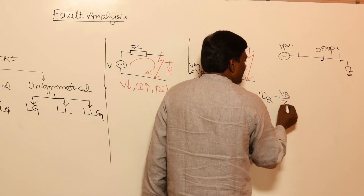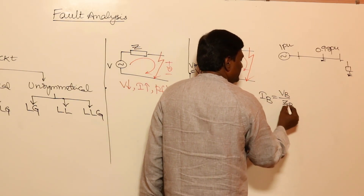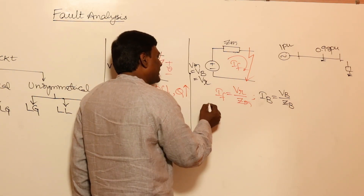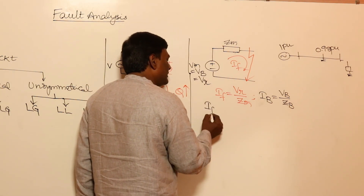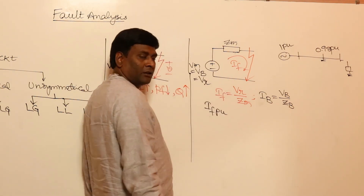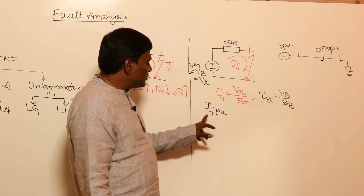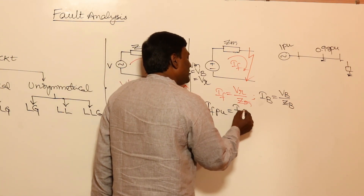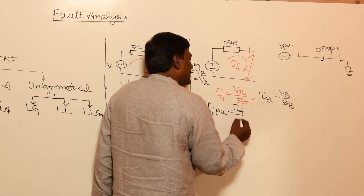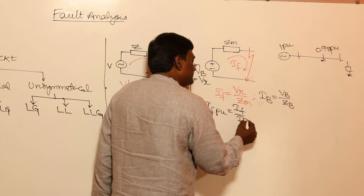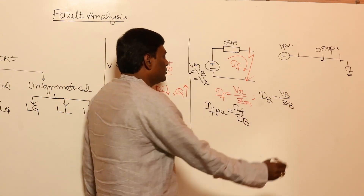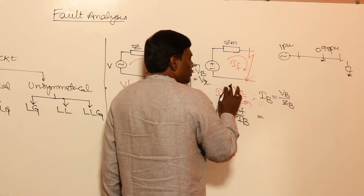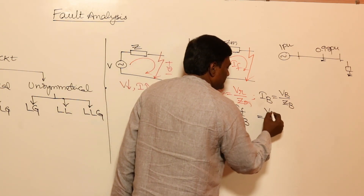The per-unit fault current is the actual fault current divided by the base current. Since fault current I_F equals V_rated divided by Z_TH, and base current equals V_base divided by Z_base, the per-unit fault current simplifies to 1 divided by Z_TH in per unit.